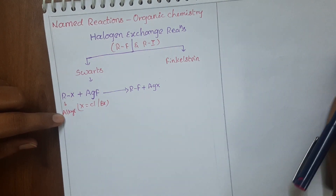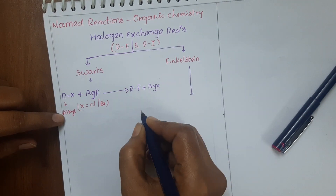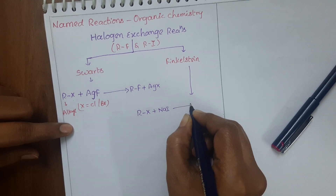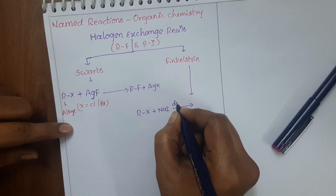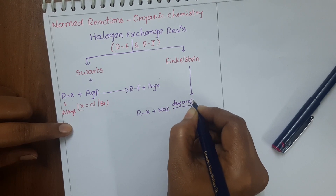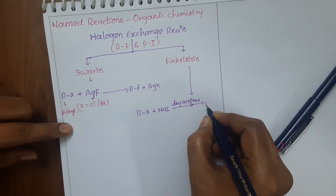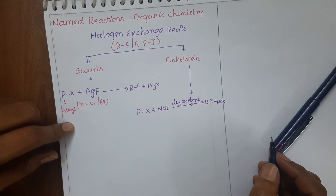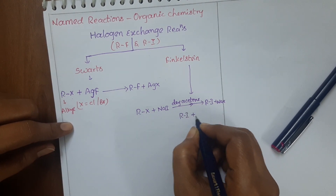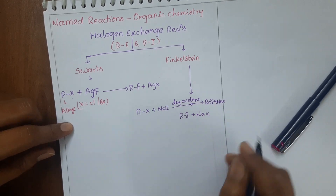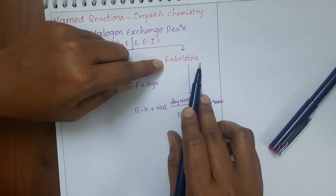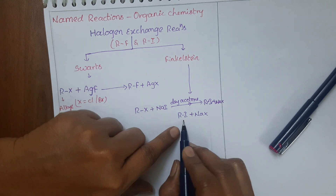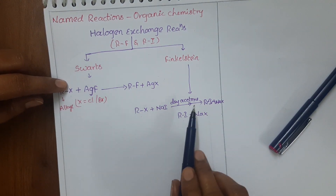Now let us see the Finkelstein reaction. In the Finkelstein reaction, alkyl halides are doing reaction with sodium iodide in presence of dry acetone — they will give alkyl iodide and also sodium halide. So in the Finkelstein reaction, alkyl halide reacts with sodium iodide in presence of dry acetone and we get alkyl iodide. These are the Swartz reaction and the Finkelstein reaction.